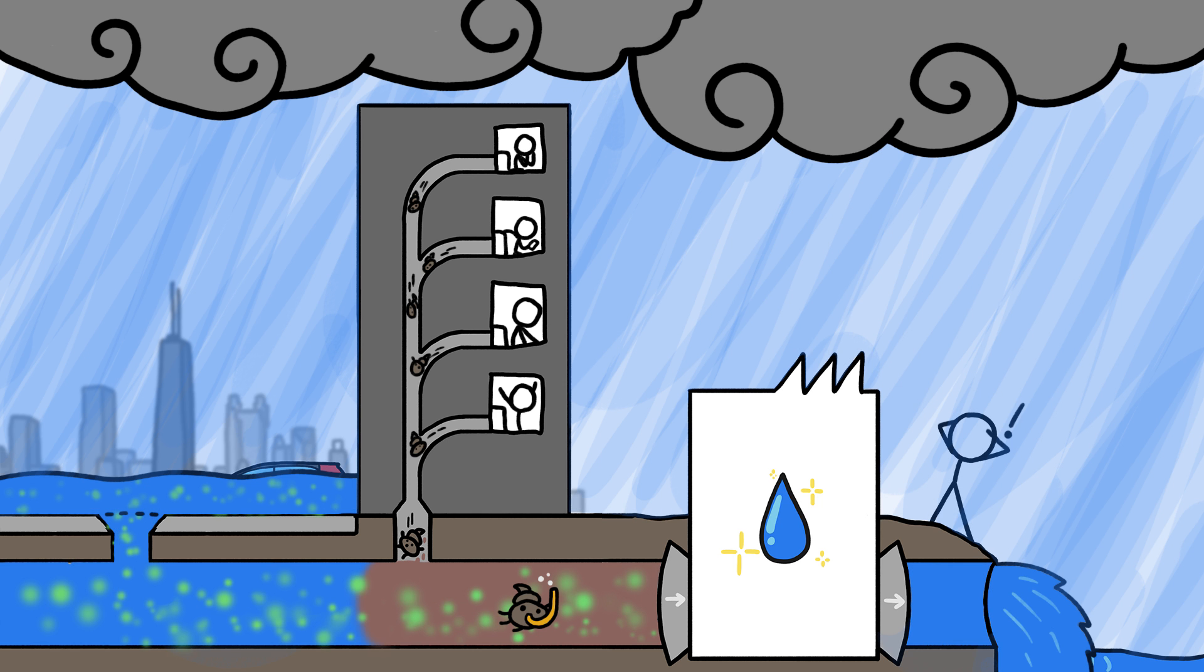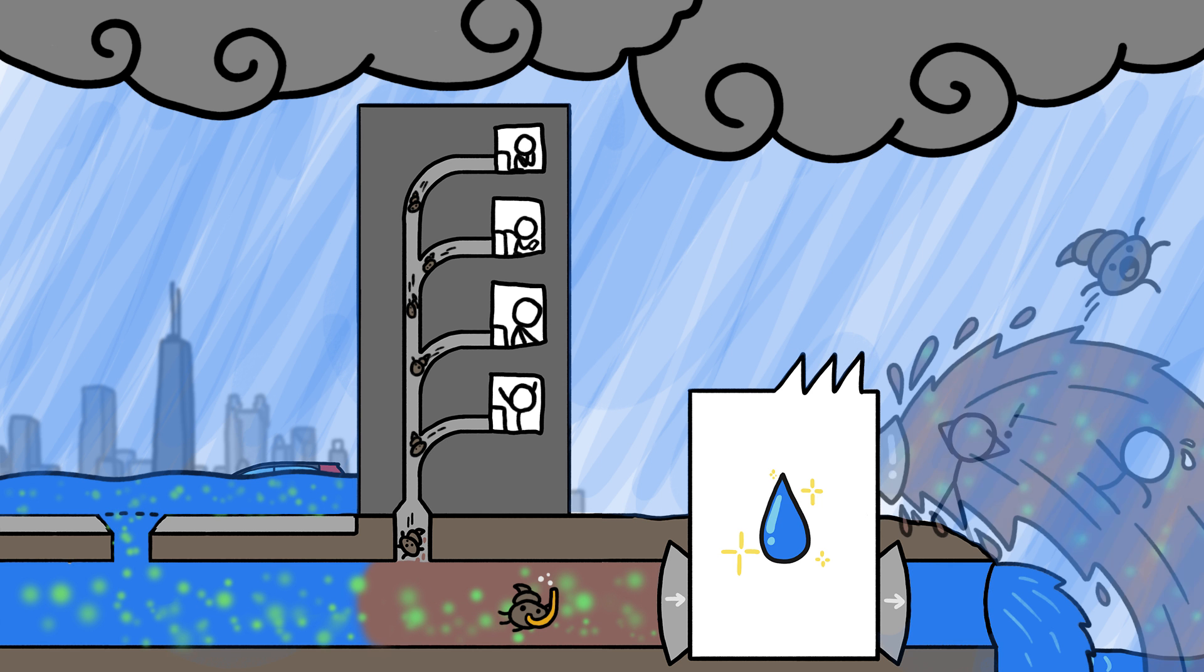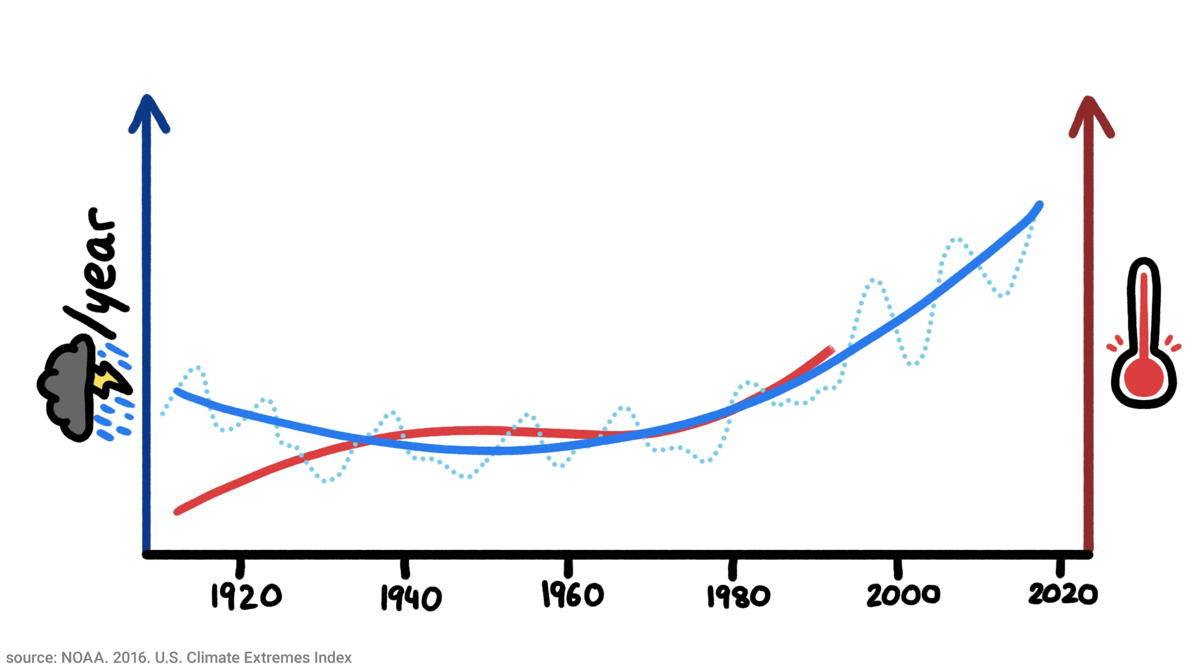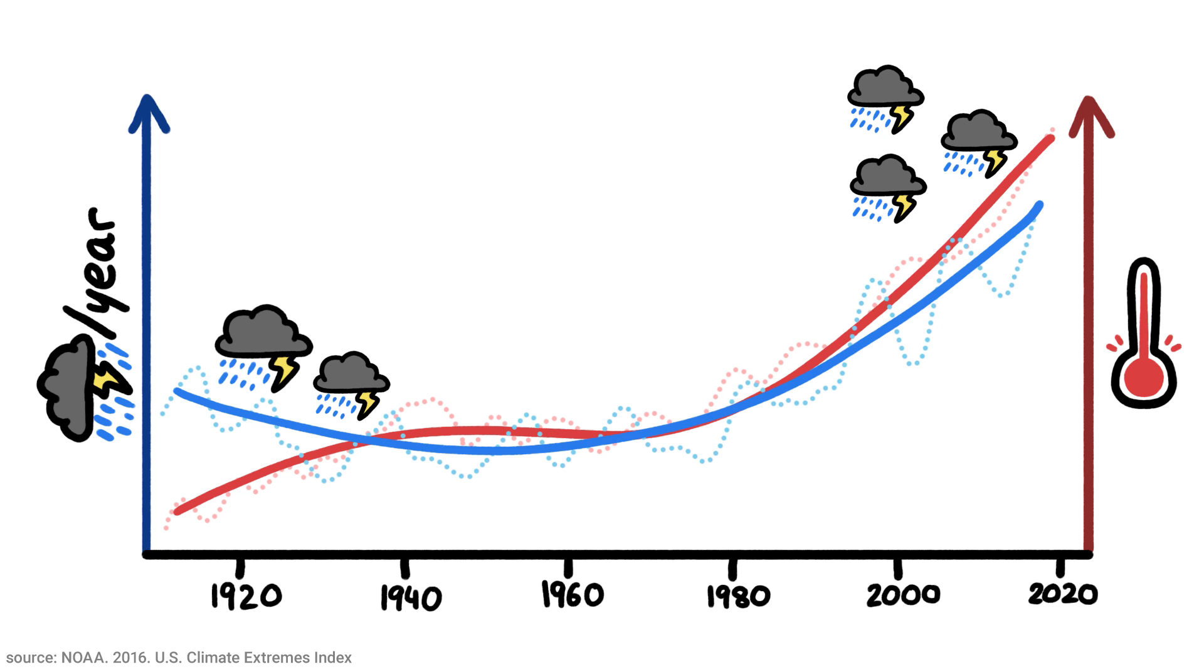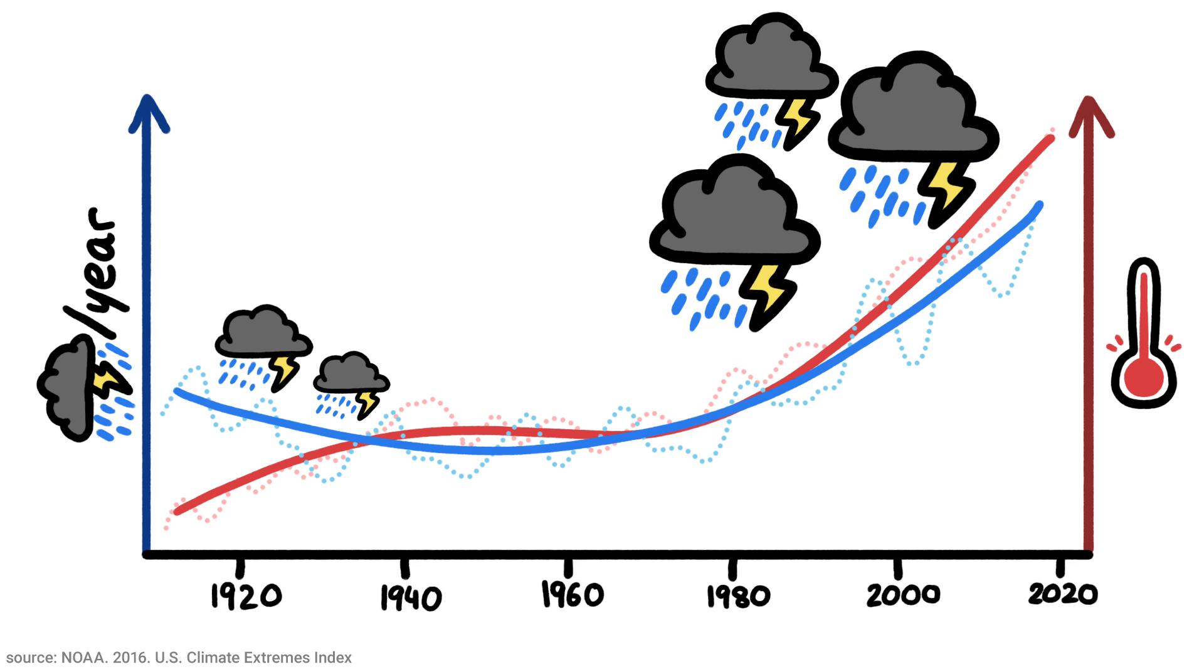But unexpected megastorms could occasionally overwhelm the plant capacity, causing raw sewage to again overflow into nearby waterways. And nowadays, mostly because of climate change, megastorms are happening much more frequently and are mega-er than ever.